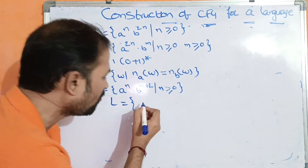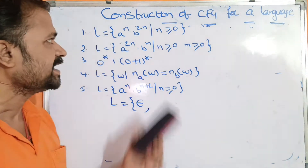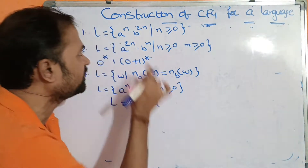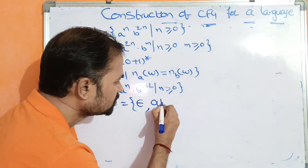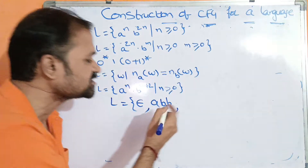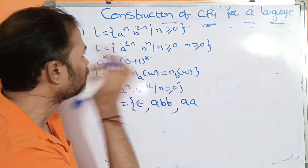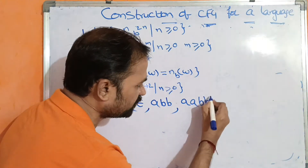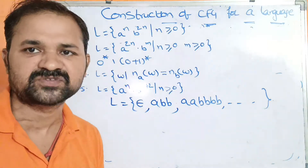When n=0, 0 occurrences of a and b is nothing but epsilon. If n=1, then a power 1 means a, and b power 2n means b power 2 — that is double b. If n=2, then double a, b power 4 — that is 4 b's. Likewise, we can have any number of strings.